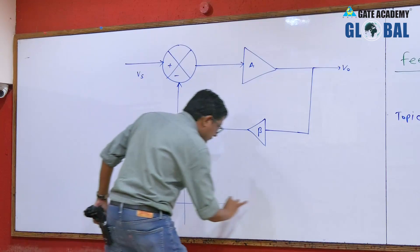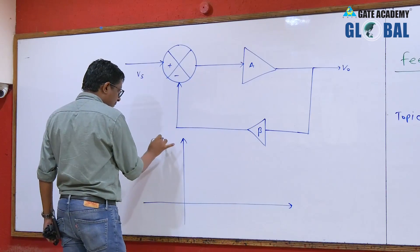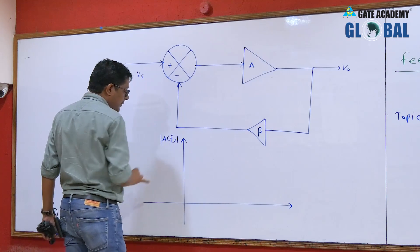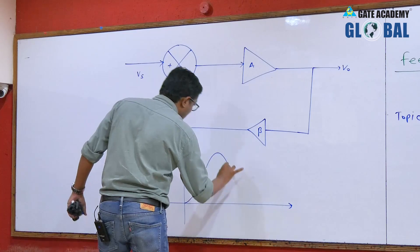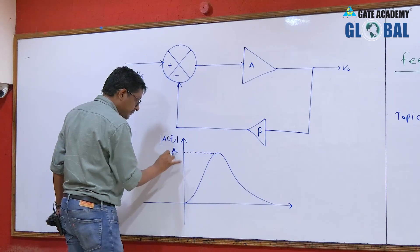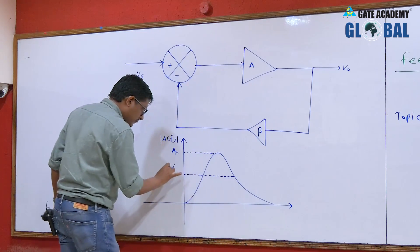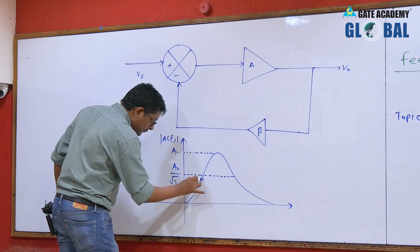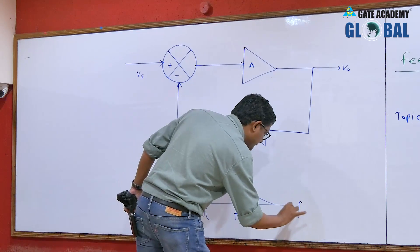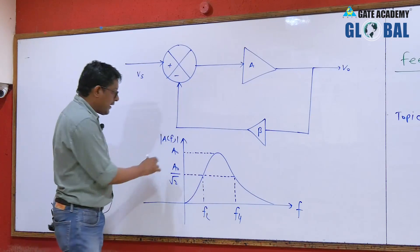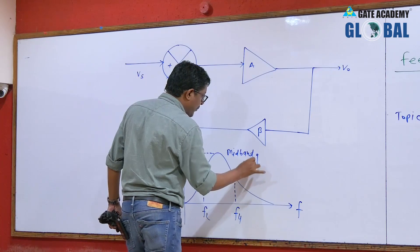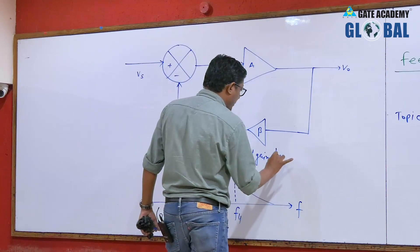First note down the frequency response of this basic amplifier. This is the frequency response of the basic amplifier. A naught is the mid-band gain — this A naught is the mid-band gain, which is the important terminology in frequency response, or maximum gain of the amplifier.